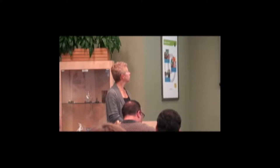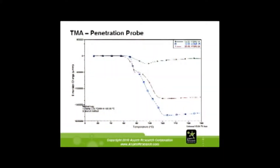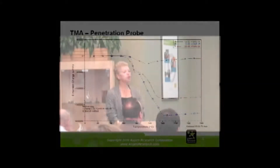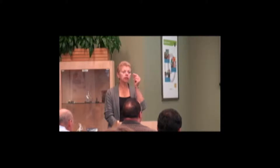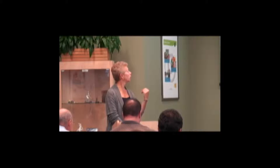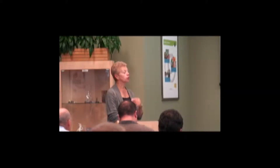Here are some samples run with the penetration probe. All of these samples started out about the same, but you can see what happens to the different samples as temperature increases. The penetration probe has a small nub at the bottom that pokes down into the sample — that's what distinguishes it. The probes used for coefficient of thermal expansion are flat, while the penetration probe has more of a pointed nub.